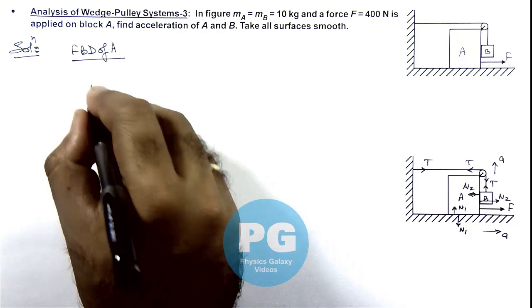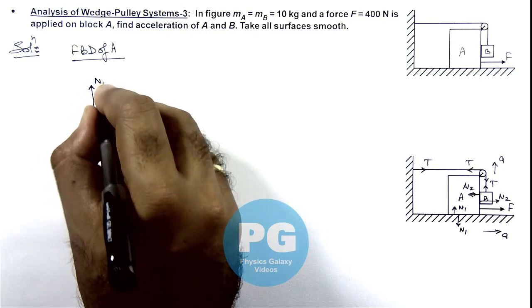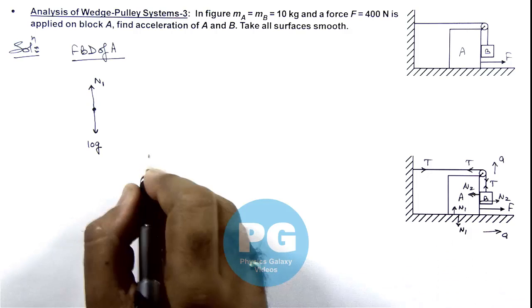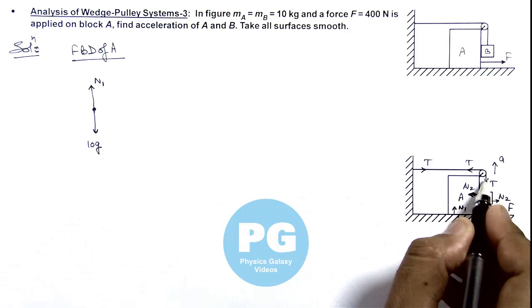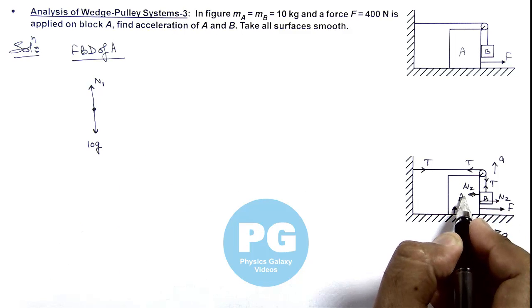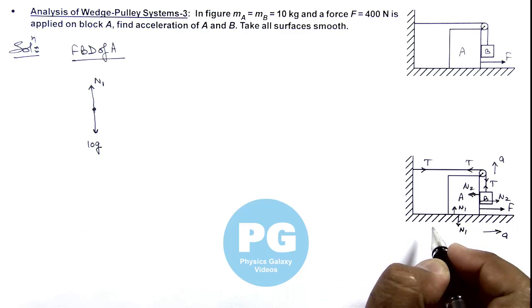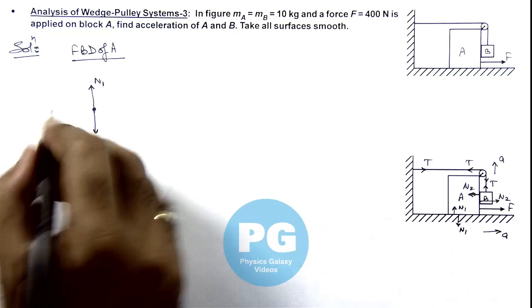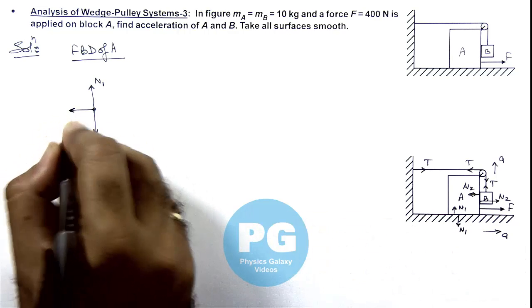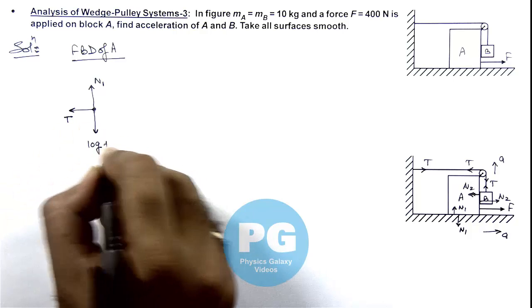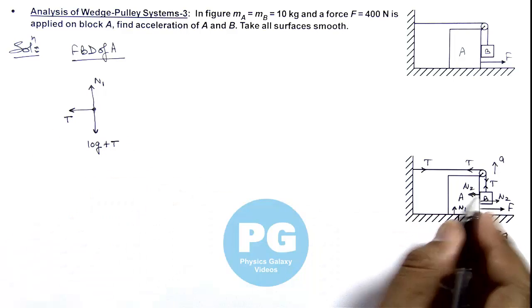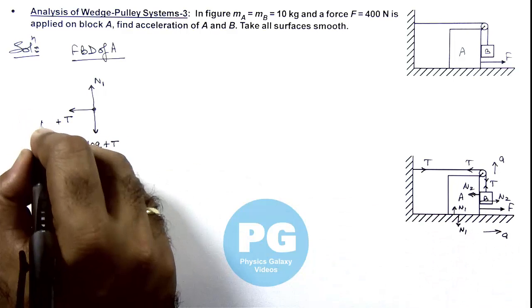In upward direction it is experiencing the normal reaction by ground which is N1. These 2 tensions are also applied in FBD of A because the pulley is rigidly fixed with block A. So here we can write 1 tension will act in this direction other is in this direction. And a normal reaction N2 is also applied over here.